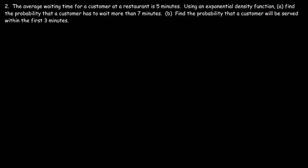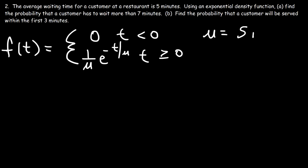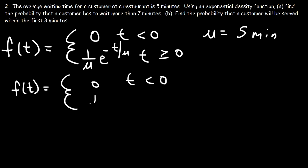Now let's work on another problem. The average waiting time for a customer at a restaurant is 5 minutes. Using an exponential density function, find the probability that a customer has to wait more than 7 minutes. The function is 0 when t is less than 0, and when t is greater than or equal to 0 it is (1 over the mean) times e raised to the negative t divided by the mean. Since the mean is 5 minutes, f of t equals (1 over 5) e to the negative t over 5.